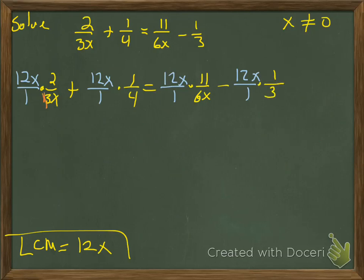The first one: 3 goes into 12 four times, the x's cancel, you'd be left with 4 times 2, which is 8. Next, 4 goes into 12 three times, we're left with 3x. Equals: 6 goes into 12 twice, the x's cancel, we're left with 2 times 11, which is 22. 3 goes into 12 four times, so we're left with 4x.